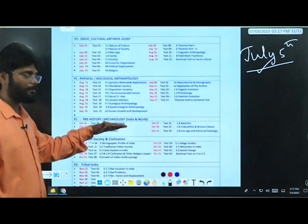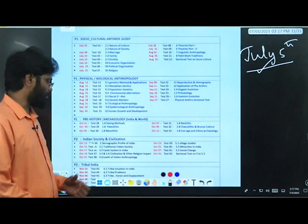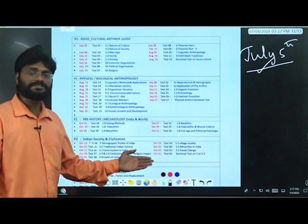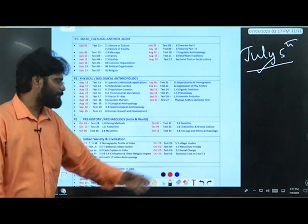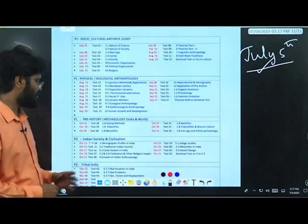Indian society and civilization - demographic profile of India one test, traditional Indian society one test, caste system in India one test with the concept of civilization studies as well as various religious impacts on Indian society one test, growth of Indian anthropology another test, Indian village studies another unit test, and minorities problems in India another unit test. You can see social change in India another test, and you will write a sectional test - that is test number 42 by October 31st.